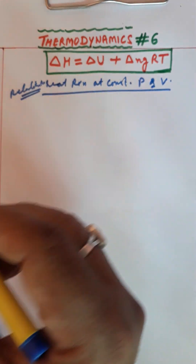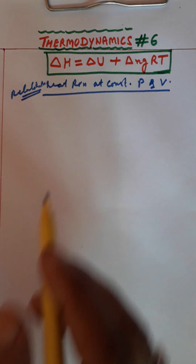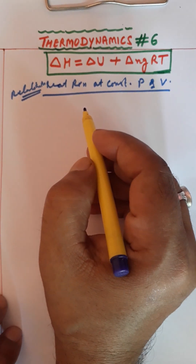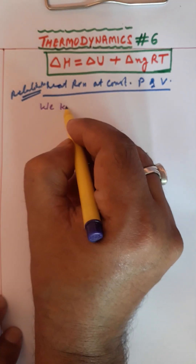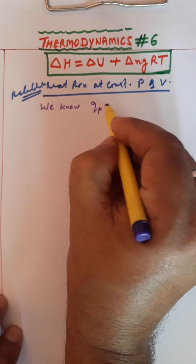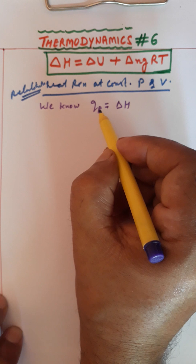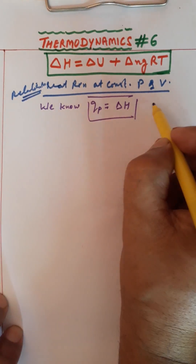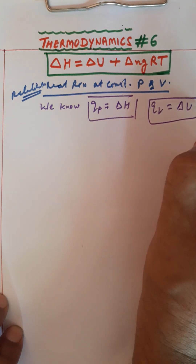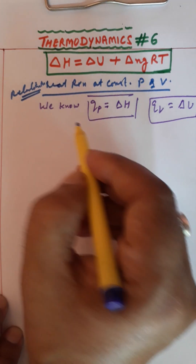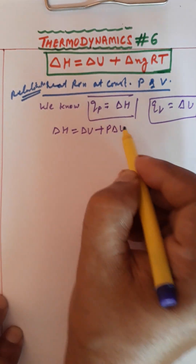मैं पहले आपको यह equation solve करके बताता हूँ कि किस तरीके से यह equation solve होगी। देखो, इस equation को solve करने के लिए हमें पता है — कल भी मैंने thermodynamics में करवाया था — we know QP is equal to ΔH, मतलब constant pressure के उपर। अब हमें पता है ΔH is equal to ΔU + PΔV — यह relation भी हमने पढ़ा हुआ है, यह relation है at constant pressure।